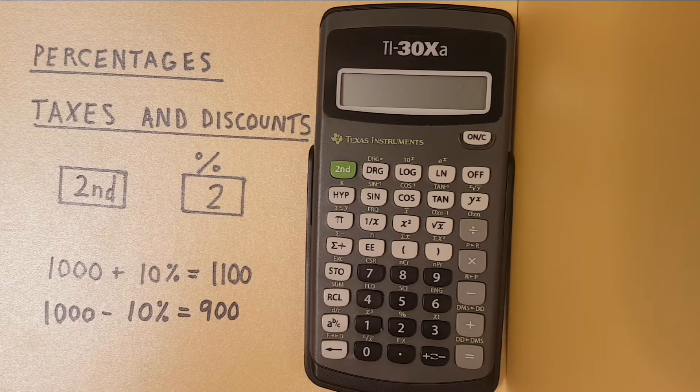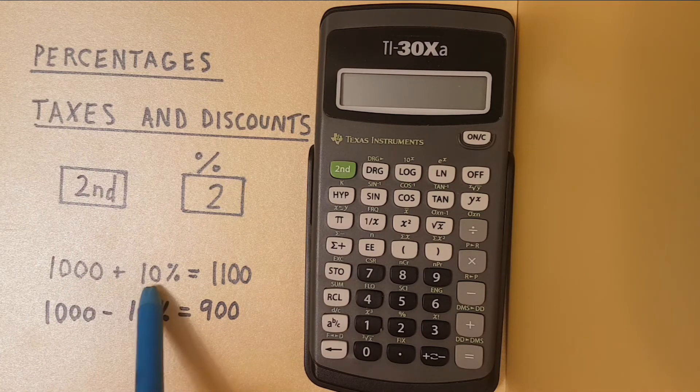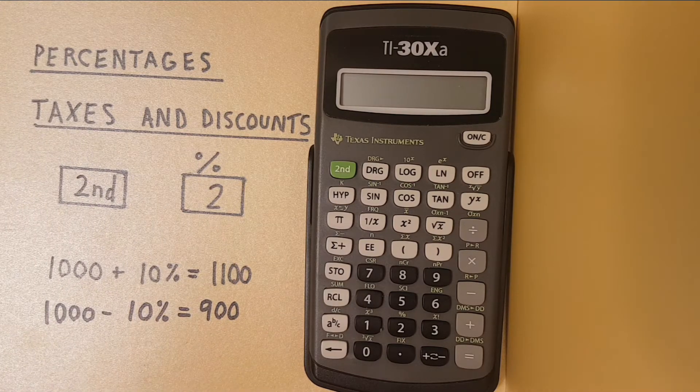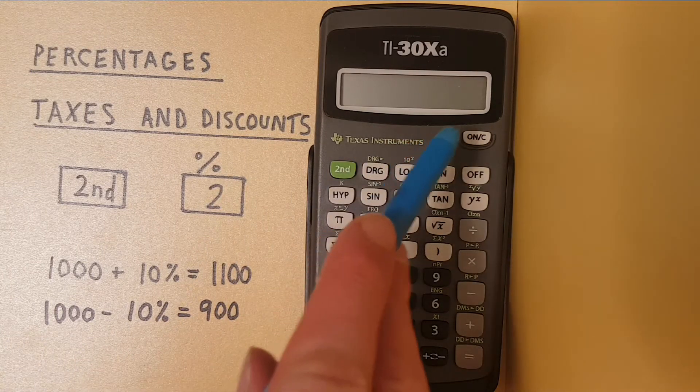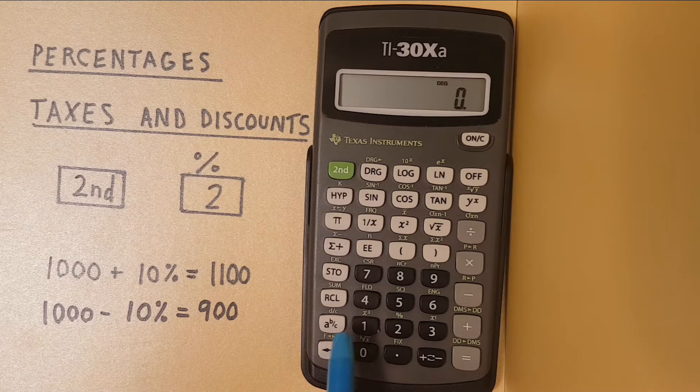To start, let's say we had an item worth $1,000 and it had 10% tax on it and we wanted to determine how much that item would cost. We start by entering the price of $1,000.